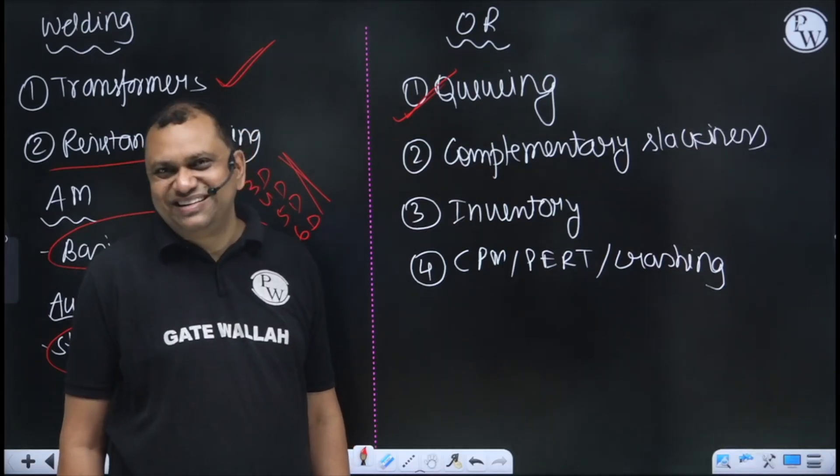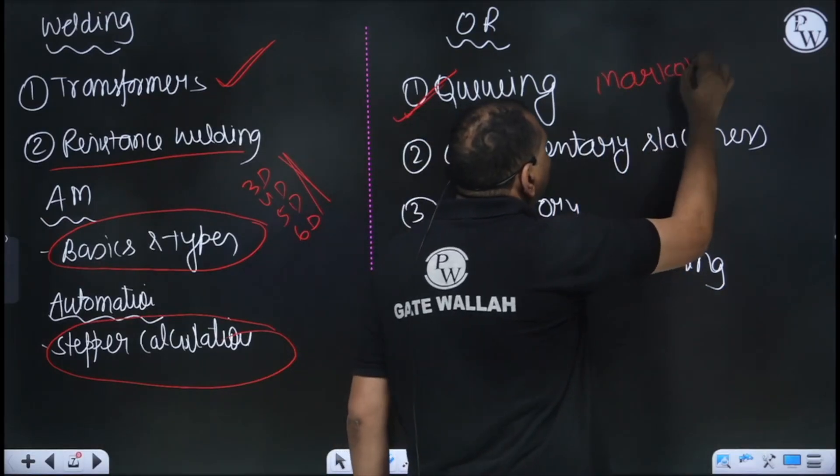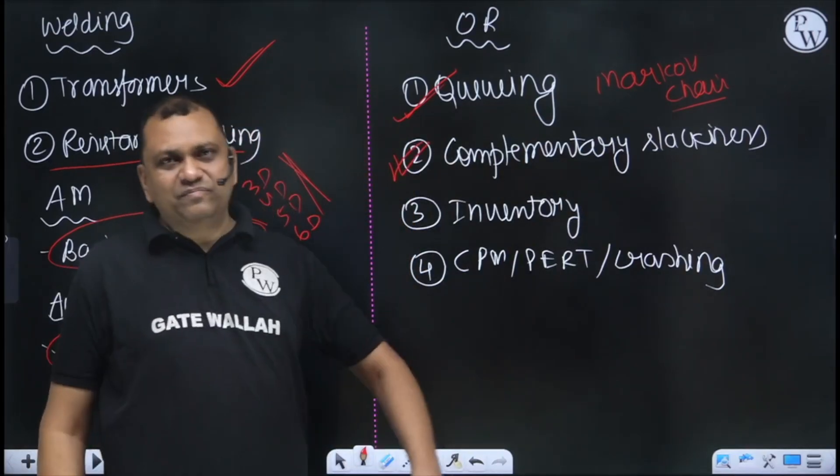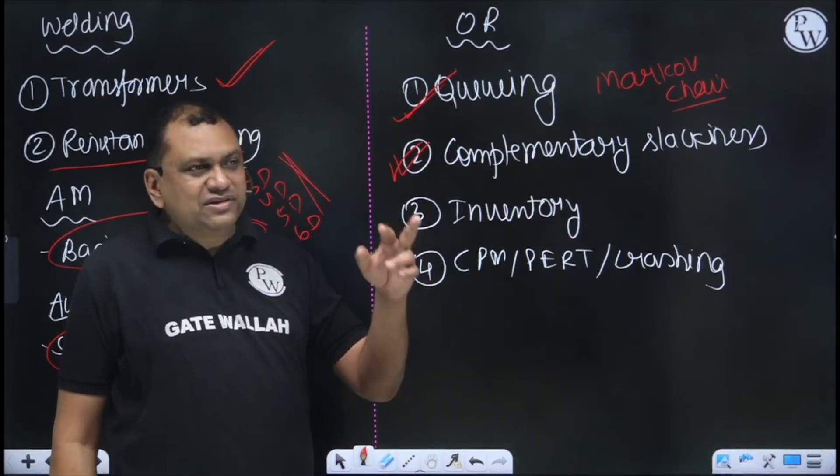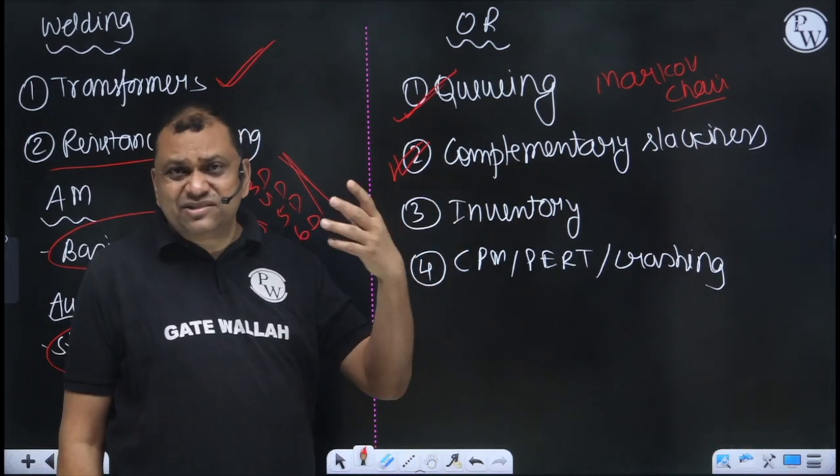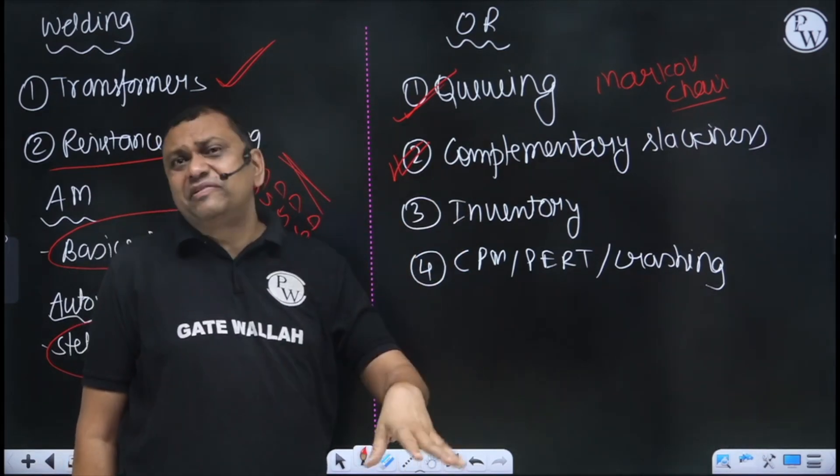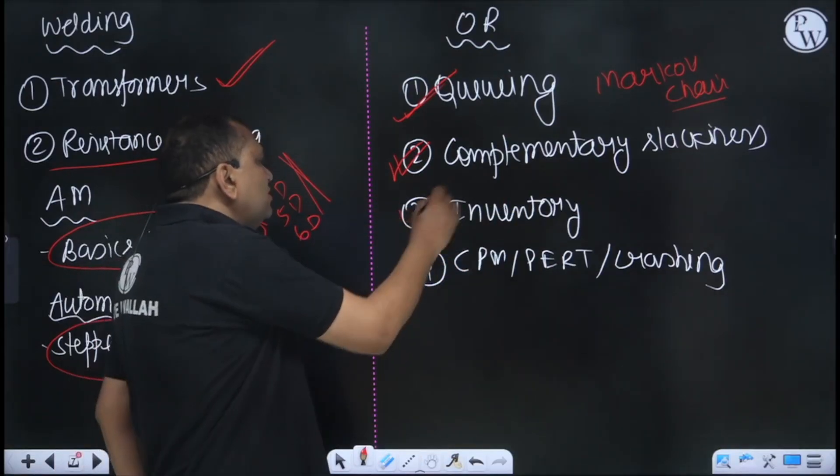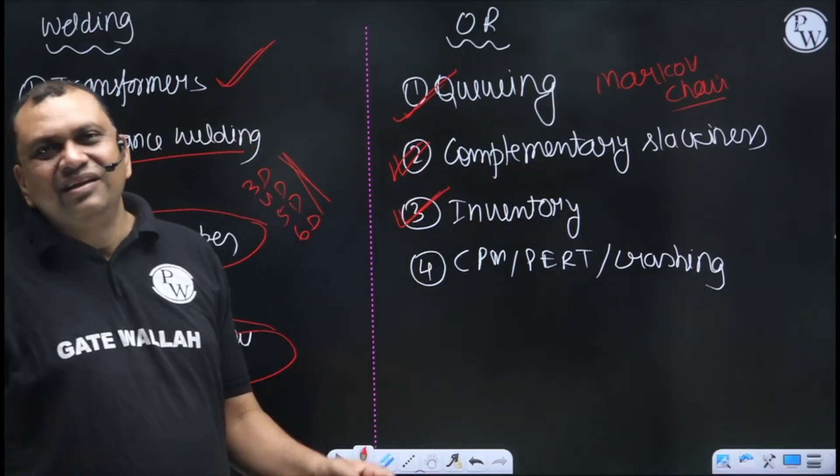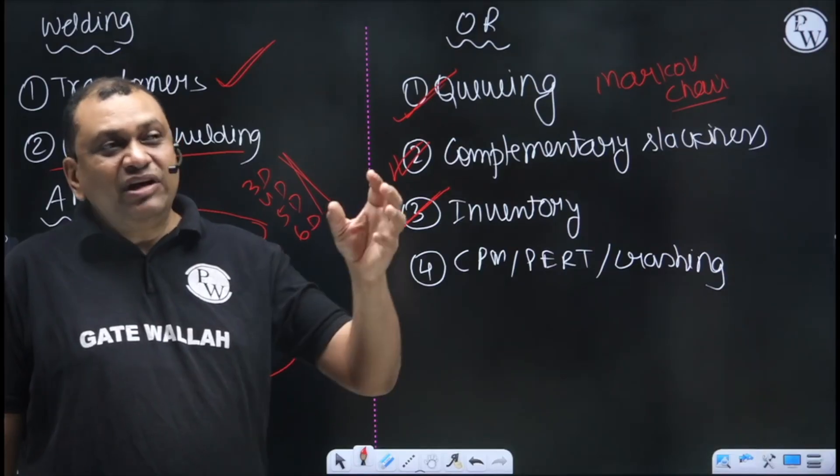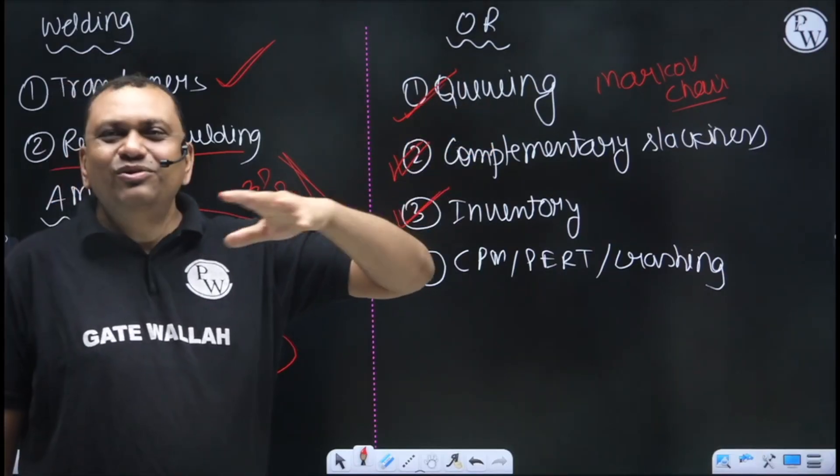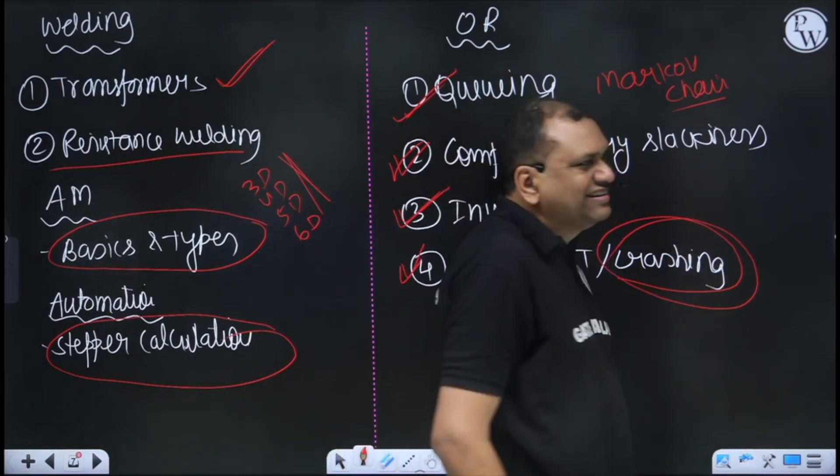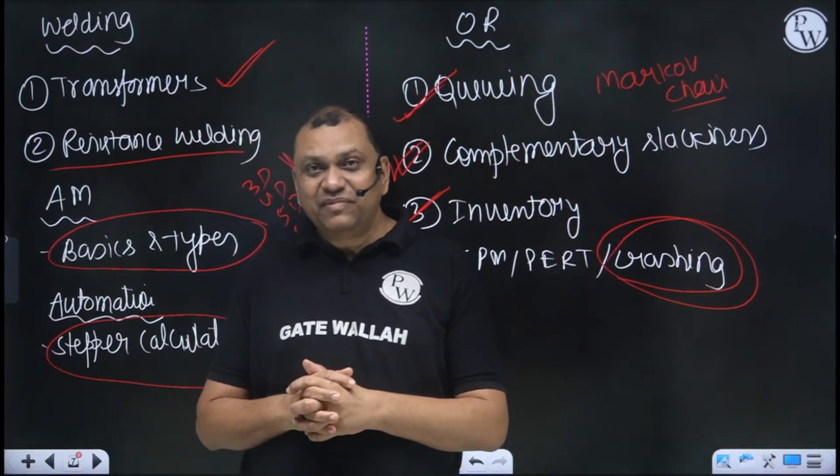If some problem comes from queuing theory, you should focus on Markov chain. One question will definitely come from queuing. I'm expecting that one question may come from simplex method, complementary slackness theorem, because last five to six years these questions have not come. Some people say that simplex is not in the syllabus - wrong. Simplex questions come very frequently. What is the fundamental based question? So complementary slackness theorem you should focus on. Inventory also - in GATE, formulas don't work. You have to go directly to the triangle and go by first principle. And project management part, CPM - especially focus on crashing this year, because one question may come with high probability from crashing.